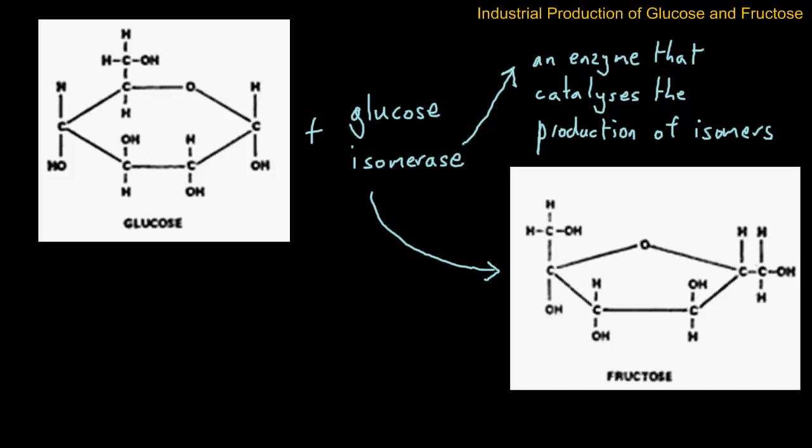So that was the final stage in the industrial production of glucose and fructose from starch. You may be wondering at this stage why would they go to all this trouble. The main reason is that when they use fructose, it's much sweeter than glucose and sweeter than sucrose. And this means that they can use less of this when they're sweetening soft drinks or when they're adding it to cakes or biscuits.